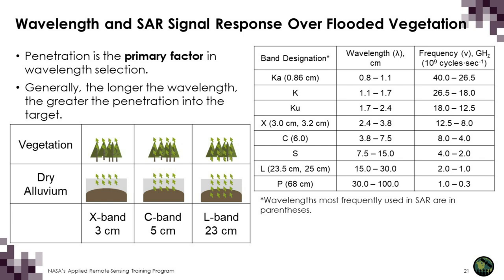There are two important things to remember about wavelength. First, the longer the wavelength, the greater the penetration through the medium. Second, the length of the wave determines the interaction with surface objects — the wave will interact with objects approximately its size. For example, if an L-band wave of around 24 centimeters encounters a surface with height fluctuation on the order of 5 centimeters, there will be minimal to no scattering — the surface will appear smooth and the pixel will appear dark. However, if a C-band signal with a wavelength of around 5 centimeters hits that same surface, it will appear bright due to increased backscatter.